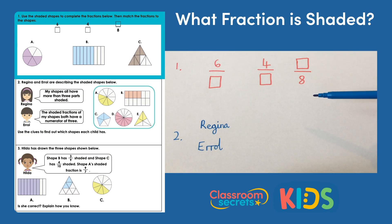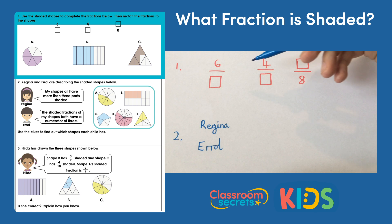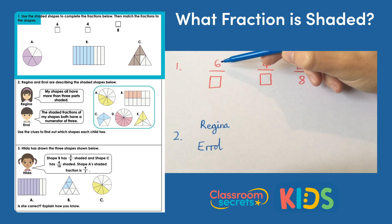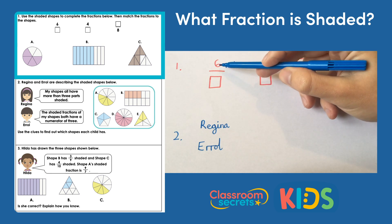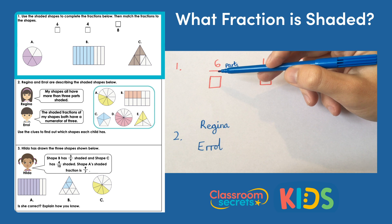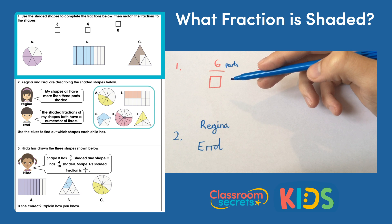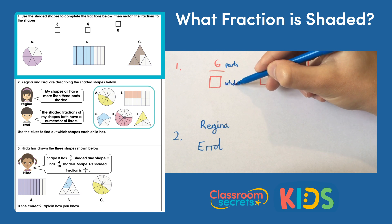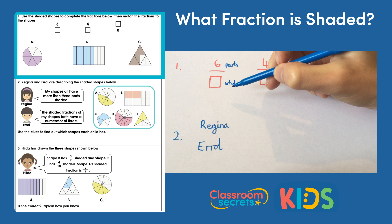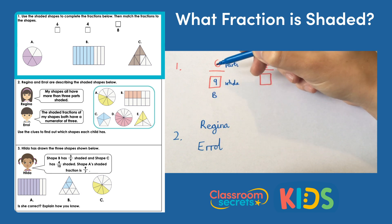Question one wants us to use the shaded shapes to complete these fractions and then match them up to those shapes. We've been given the top number — the numerator — so that's how many parts we're looking at. Looking at those pictures, we're looking for one with six parts shaded in, and that's shape b. The denominator is the total number of parts — counting them up, there are nine parts altogether in shape b: six ninths.